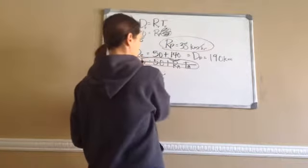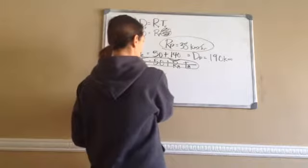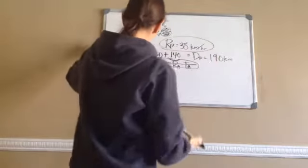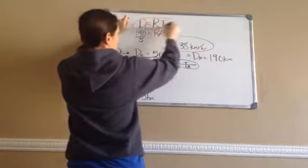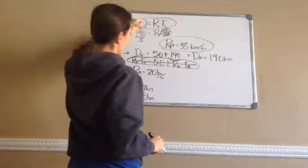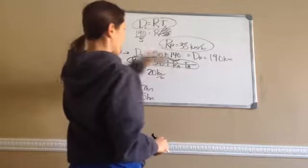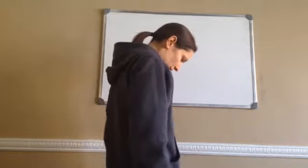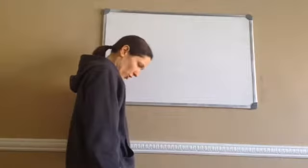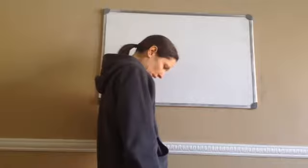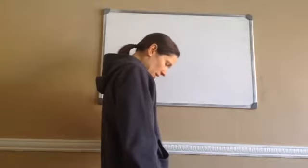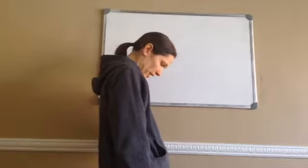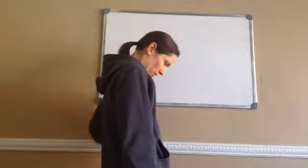We ended up not even having to use the full equation setup from before — we just wrote down all our information and used the D = R × T equation for Patroglos and Achilles. Now let's look at 99.2, which is quite different. Rachel has a 15-kilometer head start on Charlene. How long will it take Charlene to catch Rachel if Rachel travels at 70 kilometers per hour and Charlene travels at 100 kilometers per hour?